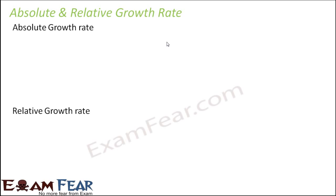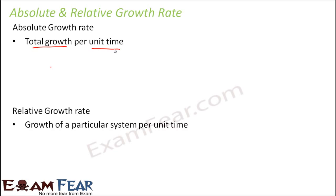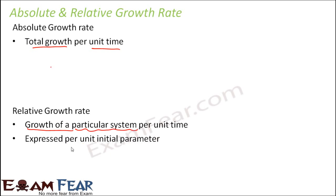Absolute growth rate means total growth per unit time. These terms are similar to absolute velocity and relative velocity in physics — whenever it is relative, it is compared to something else, whereas absolute has nothing to do with comparison. So absolute growth rate is total growth per unit time, while relative growth rate is growth of a particular system per unit time expressed per unit of the initial parameter.